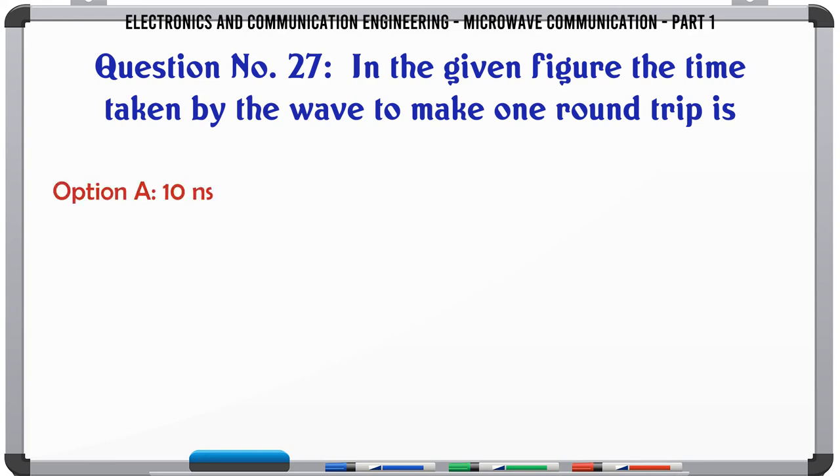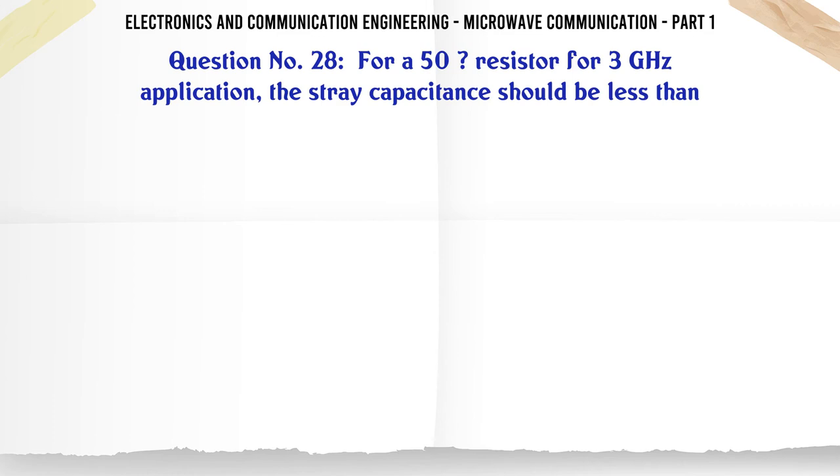In the given figure the time taken by the wave to make one round trip is: A. 10 ns, B. 20 ns, C. 30 ns, D. 40 ns. The correct answer is 10 ns.